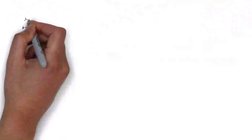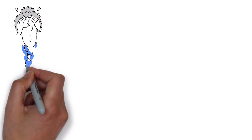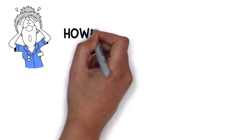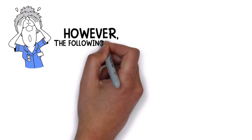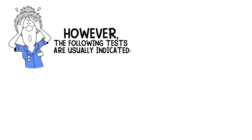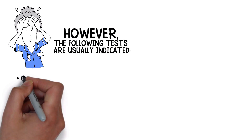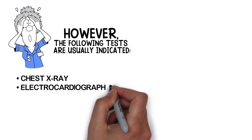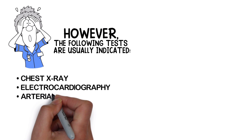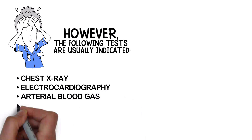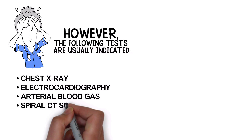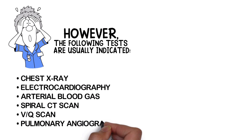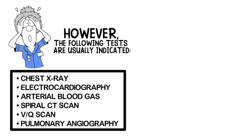It can be difficult to diagnose a patient with a pulmonary embolism in some cases. However, the following tests are usually indicated: chest x-ray, electrocardiography, arterial blood gas, spiral CT scan, VQ scan, and pulmonary angiography.